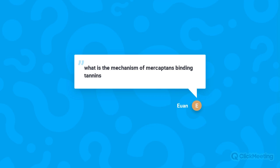Ewan asks about the mechanism of mercaptans binding to tannins. Honestly, that's not well studied yet. The 2001 paper that documented this effect didn't go into the depth of the binding mechanism, and I haven't seen other researchers follow up on it. We do suspect it is a binding mechanism, but the specifics haven't been established. Hopefully someone picks it up for further study.